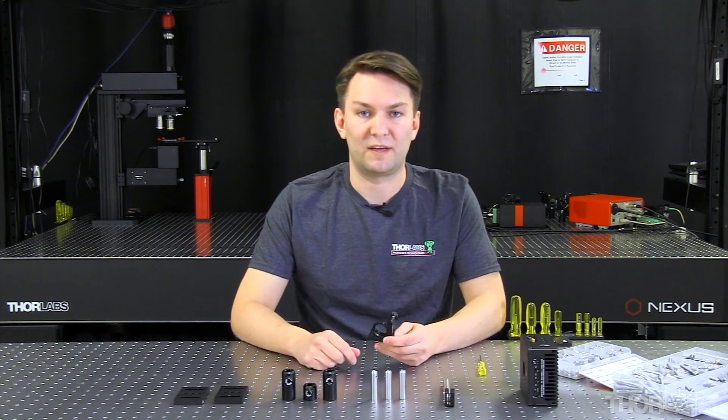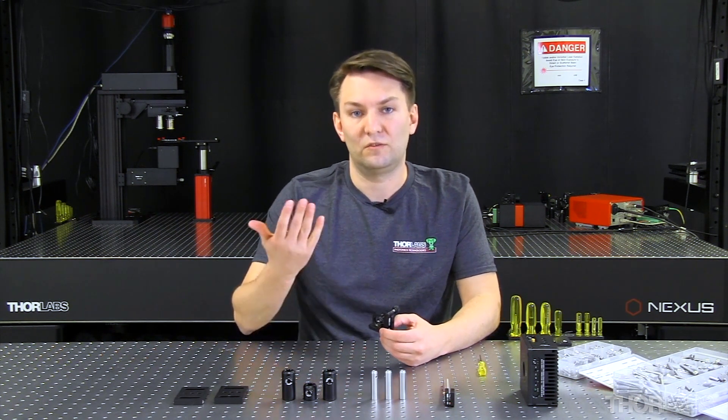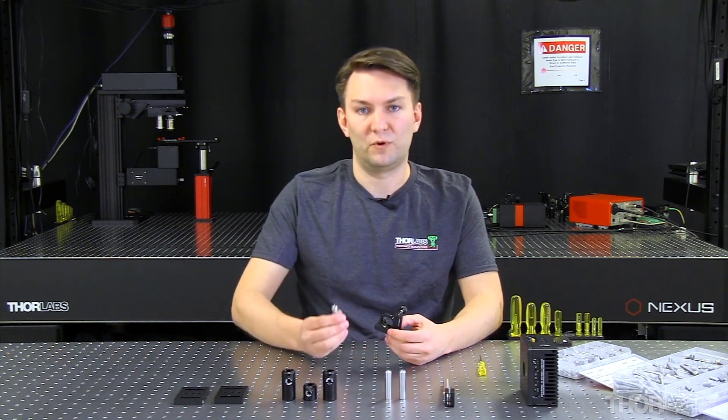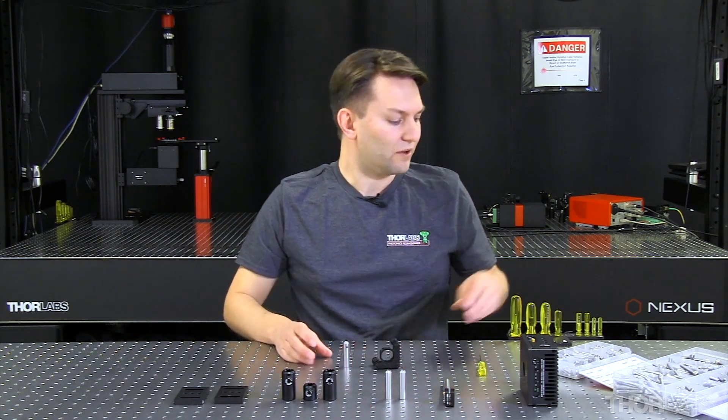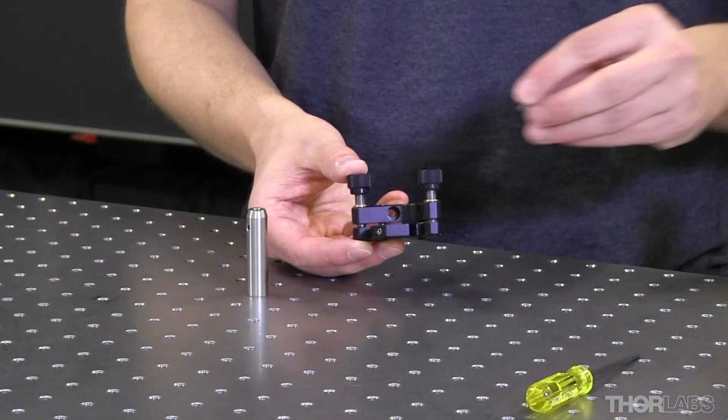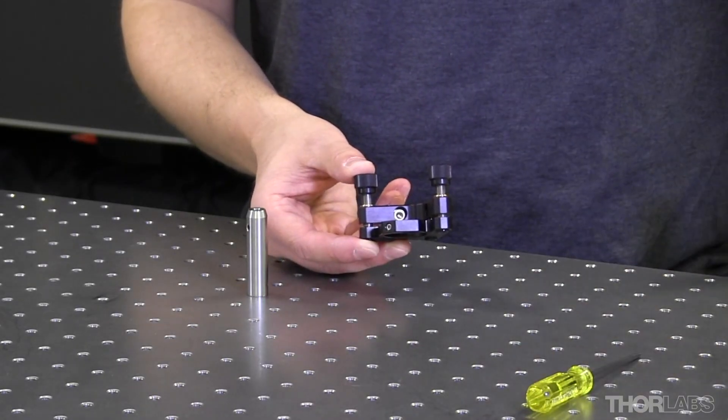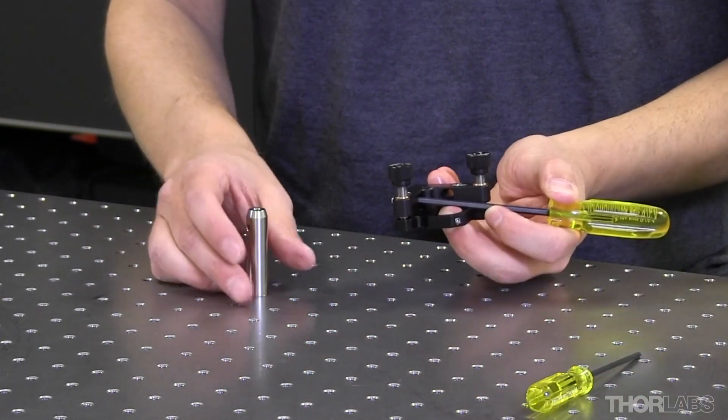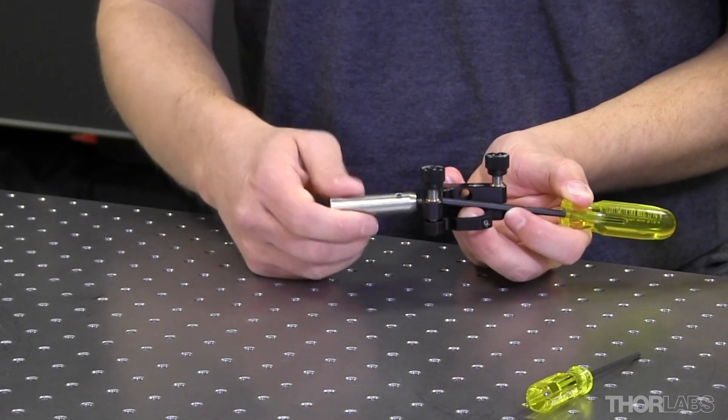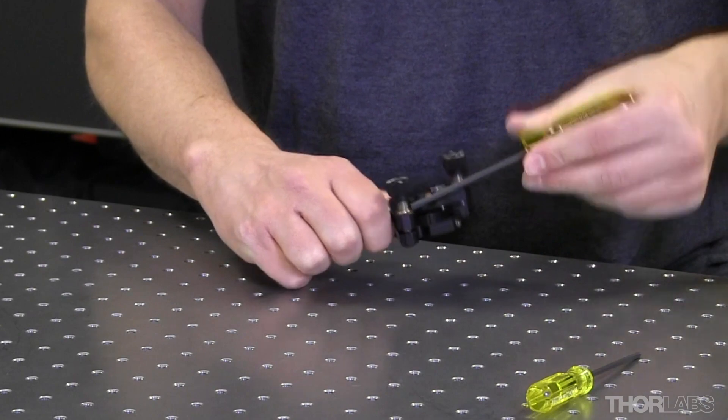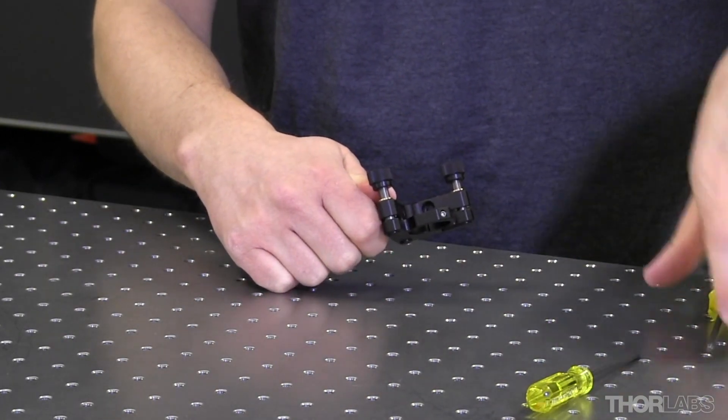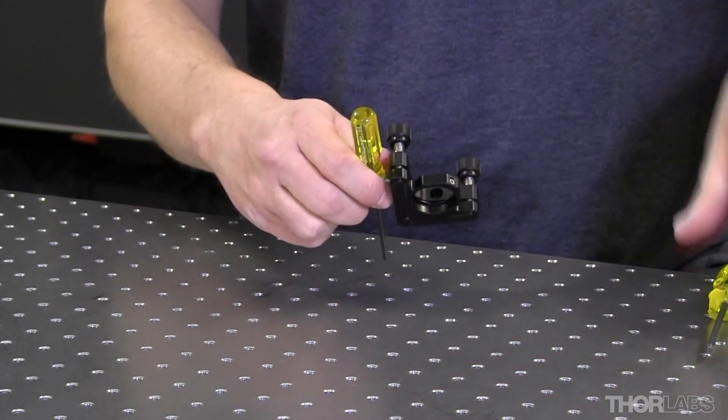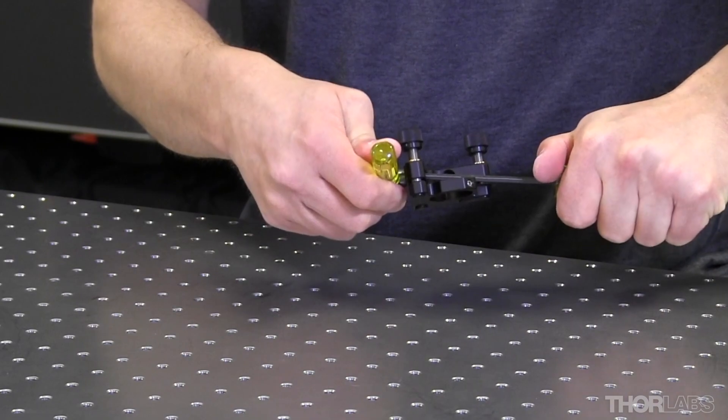Now if you happen to have a piece of optomechanics that has a through hole, then you'll want to use a cap screw to attach it to your post. So in this case, I've already removed the set screw from the top of the post. I'll grab a cap screw, put that into my mount, and use a ball driver to attach the optic mount to my post. Here again, if I like, I can use the torque hole and really snug up that connection.